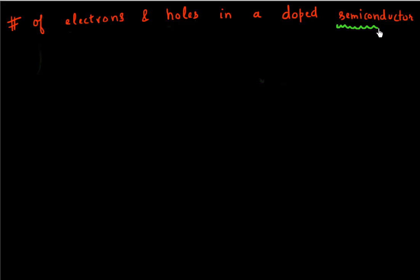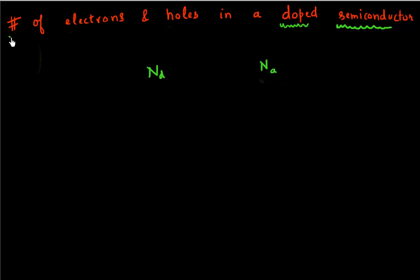I have a semiconductor, and what I've done is I've added dopant atoms to it. I've added Nd number of donors, and I've also added Na number of acceptors. So now, how many electrons and holes do I have in my semiconductor?